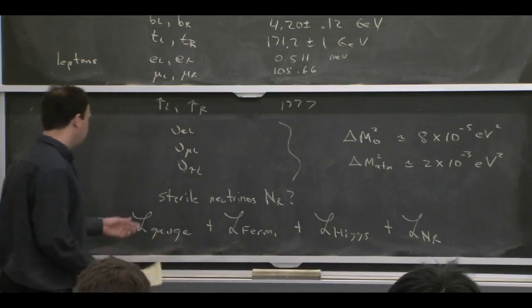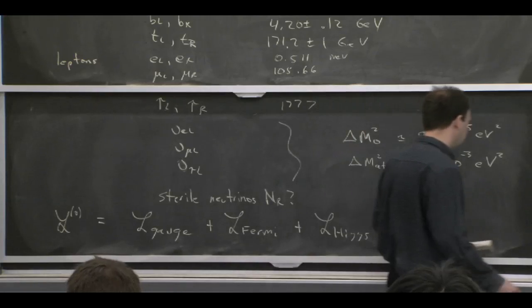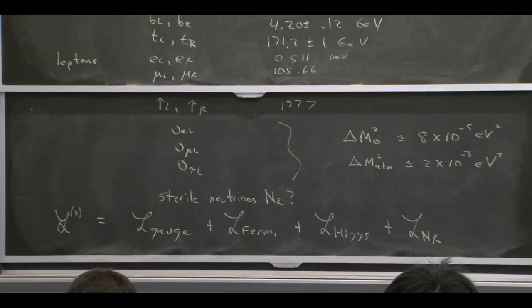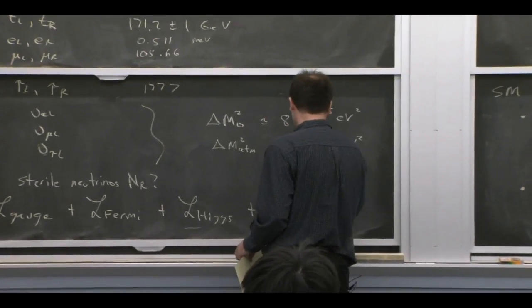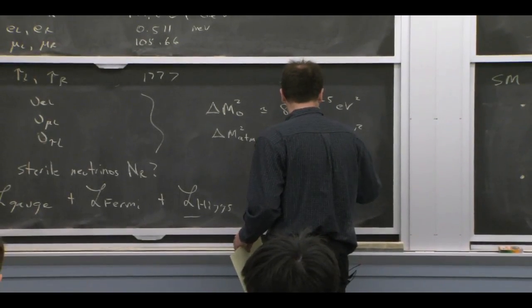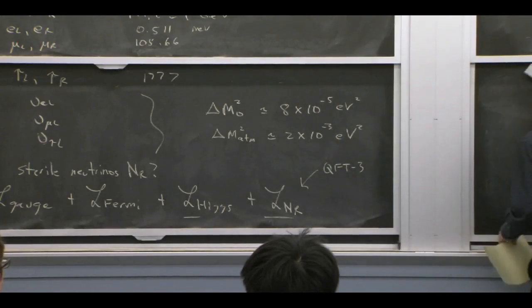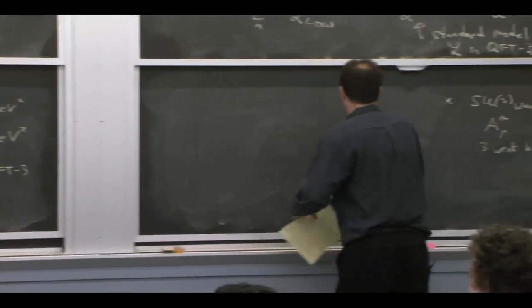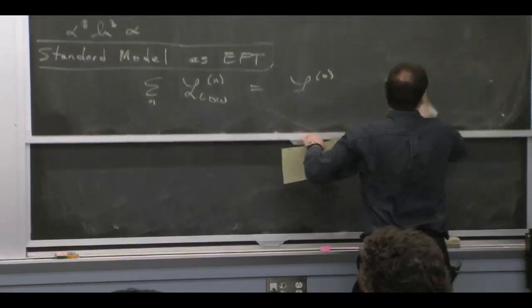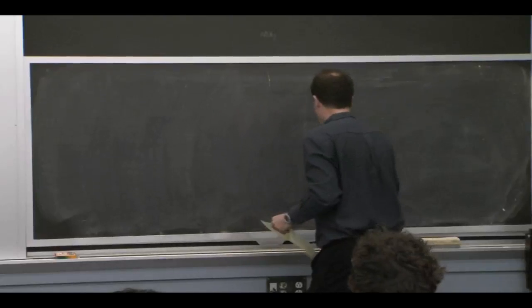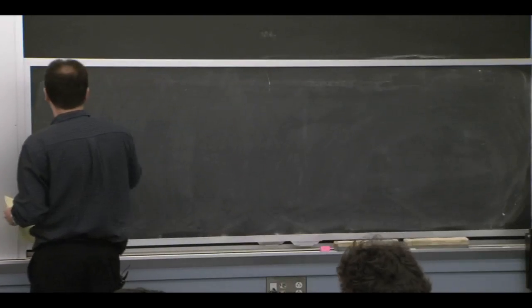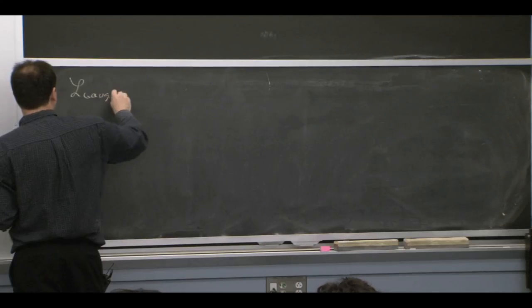So the lowest-order Lagrangian would be the gauge sector, the fermionic Lagrangian, the Higgs Lagrangian. And if we have right-handed neutrinos, we'd need Lagrangian for them, too. So these are topics that come up in QFT3. I'm not even going to touch them at the moment. I can't give you a complete review, but just a taste, emphasizing things that are important.